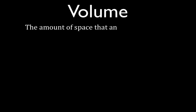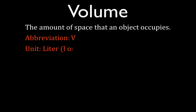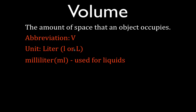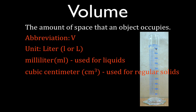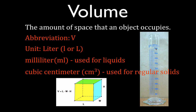The next thing is volume. Volume is the amount of space that an object occupies — how big something is. The bigger it is, the more volume it has. The abbreviation for volume is V. The unit is the liter, abbreviated as a lowercase or uppercase L. Usually in class we use milliliters, which is a thousandth of a liter, for liquids. And for a regular solid like a cube or rectangle, we use cubic centimeters, measuring length, width, and height. The volume of a regular solid is length times width times height.